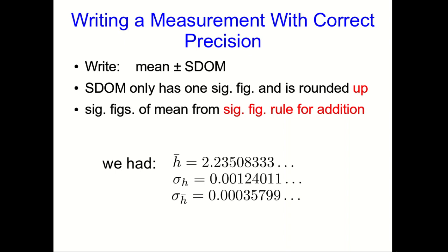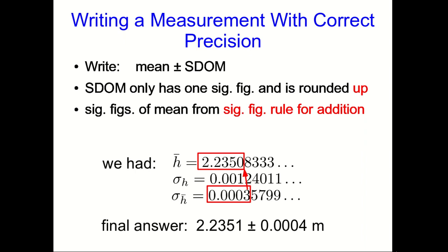So we now have our mean of our height of the door, our standard deviation of h, and our standard deviation of h bar, the SDOM. And we're going to round that SDOM up to 0.0004. And then we see that since its only sig fig is in the fourth digit after the decimal place, that tells us that that is the last significant figure in our mean. And so our final answer is going to look like this.